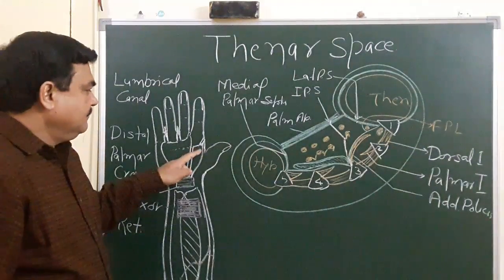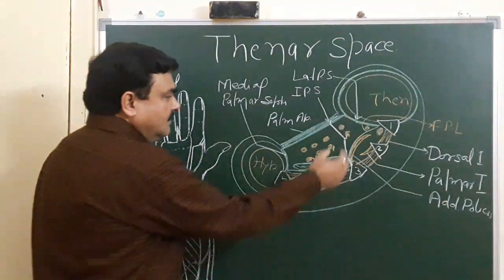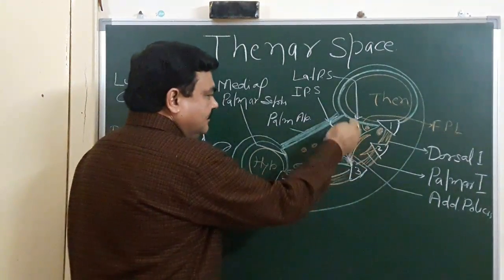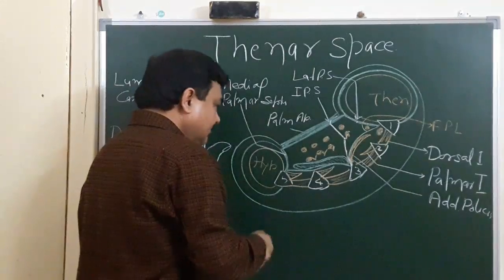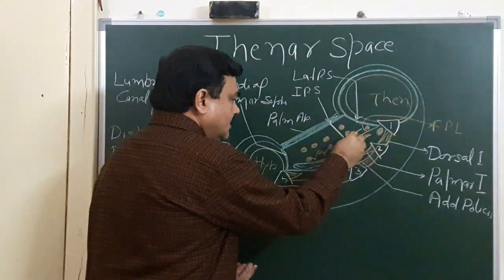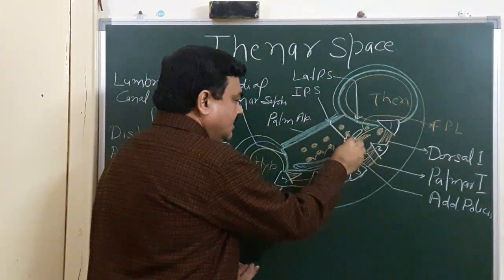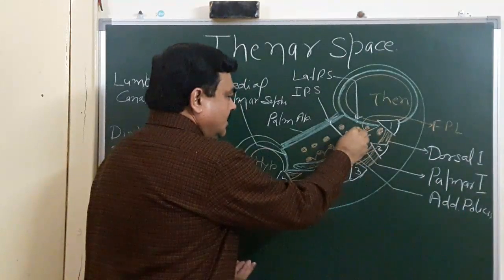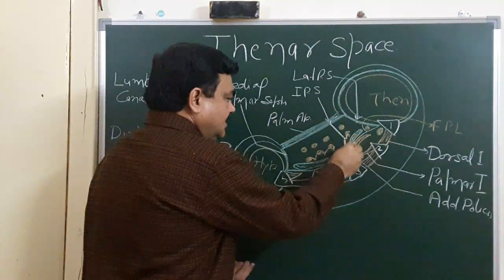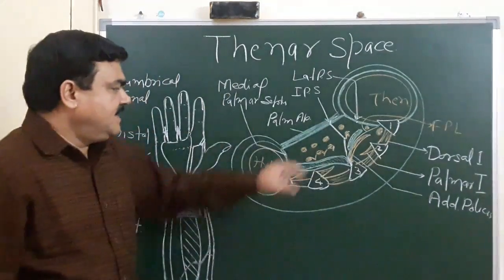Boundary of this, anteriorly, in this diagram, this space is here, this space, this space is thenar space.